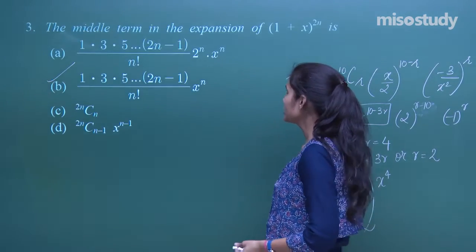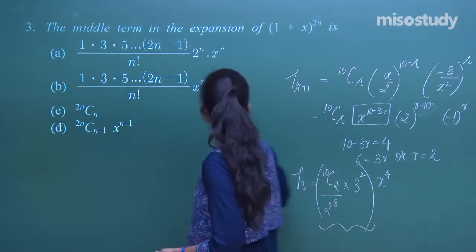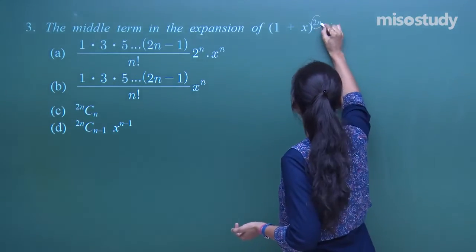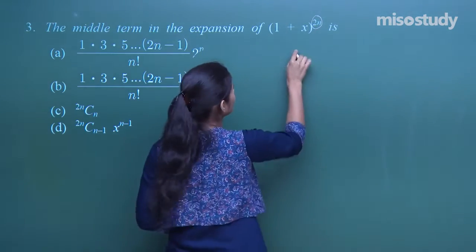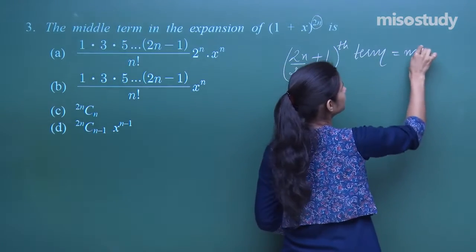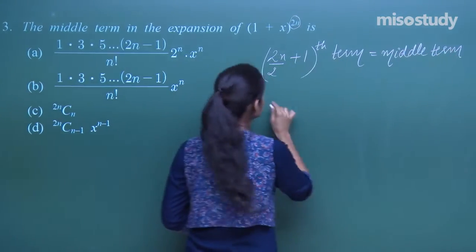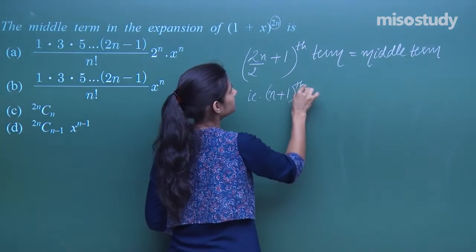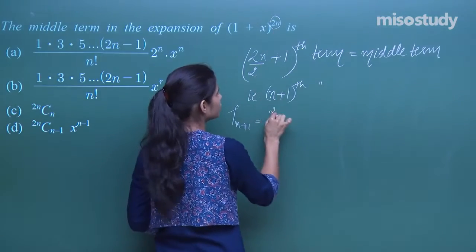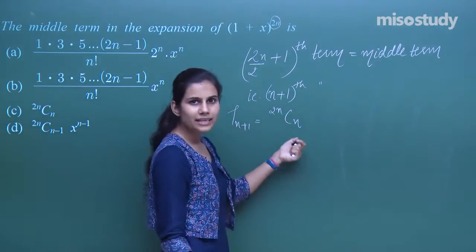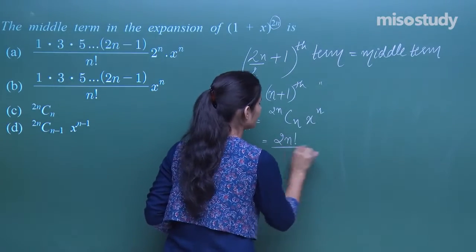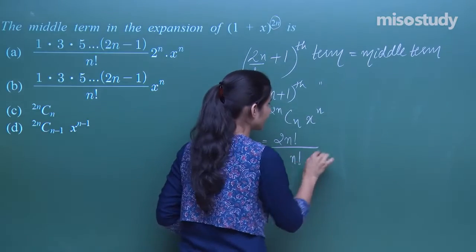The next question asks for the middle term in the expansion with index 2n. Since 2n is even, the middle term is the (2n/2 + 1)th = (n+1)th term. The (n+1)th term is 2nCn · 1^n · x^n, which equals [2n! / (n! · n!)] · x^n.